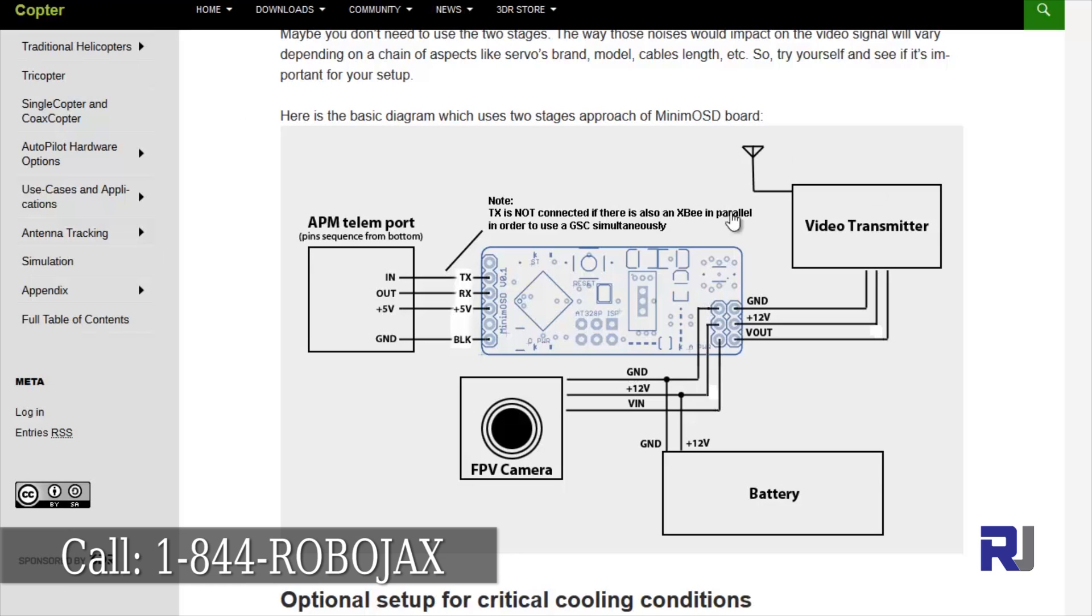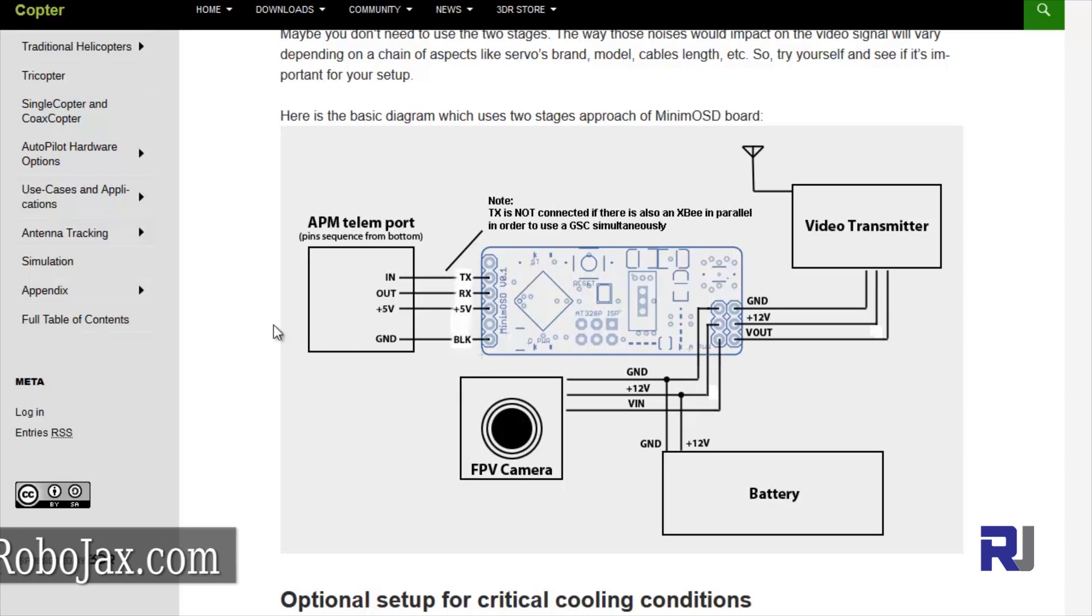This is the minimum OSD setup diagram. From this side it gets connected with a big cable to the flight controller. From here we have two cables to connect. You connect the battery directly here, so the 12 volt goes to the camera and from here it goes to the OSD. This is the video in. The video comes from the camera and enters.